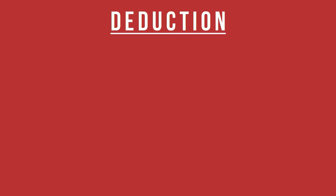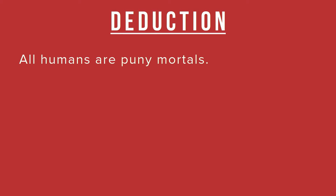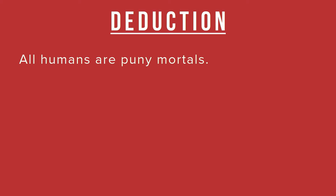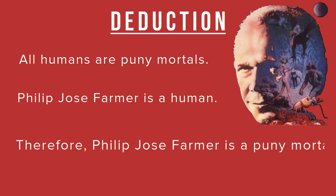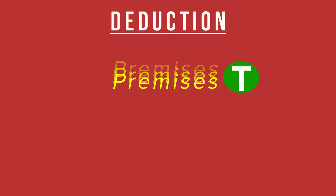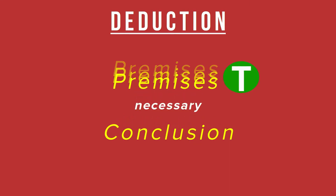Deductive reasoning is where we infer particular instances by reference to a general law or principle. For example, all humans are puny mortals. Philip Jose Farmer is a human. Therefore, Philip Jose Farmer is a puny mortal. With deductive reasoning, as long as the premises are true and necessarily imply the conclusion, then the conclusion must be true.